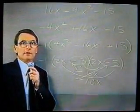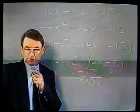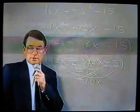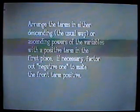And we have a graphic which shows you the first of the steps which we have utilized. Arrange the terms in either descending or ascending powers of the variable with a positive term in the first place. If necessary, factor out negative 1 to make the front term positive. Always select factors which are closest together. Probability favors those being the right ones.